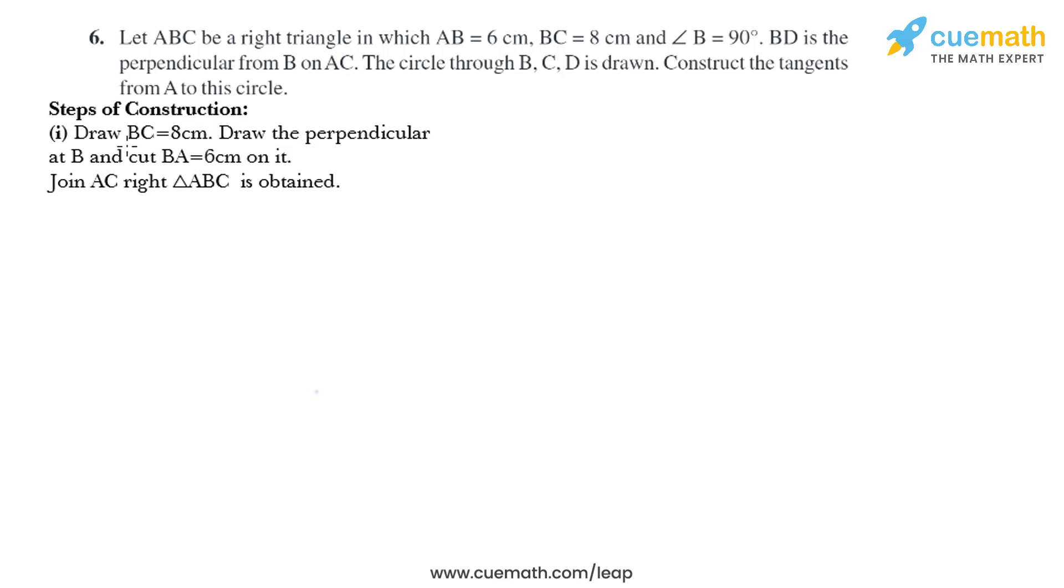Let's start with the steps of construction. Draw BC equal to 8 cm. So this is B and this is C and it measures 8 cm. Now draw the perpendicular at B and cut BA equals 6 cm on it.